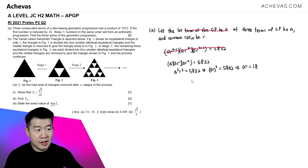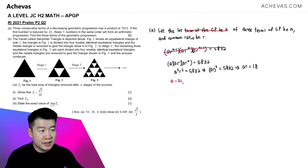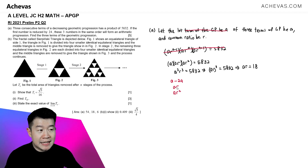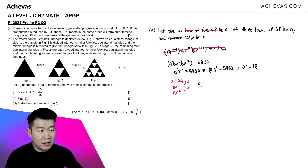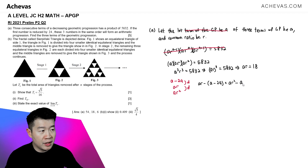The first term is now A, which means the first term is reduced by 24, giving A minus 24. The next term is still AR, and the third term is AR squared. According to the question, these now form consecutive terms of an AP, which means they follow the same common difference. So: AR minus (A minus 24) equals AR squared minus AR. We know AR equals 18, so we substitute: 18 minus (A minus 24) equals AR squared minus 18.